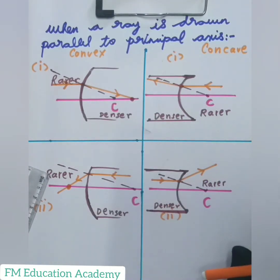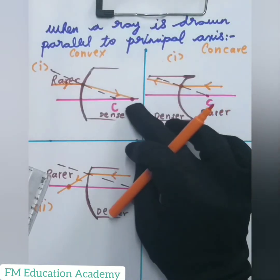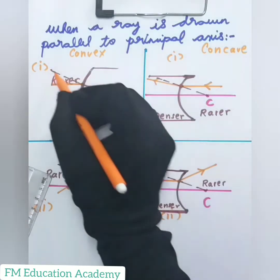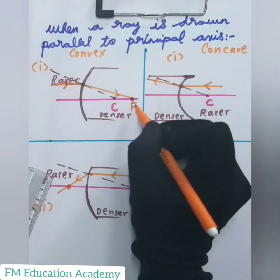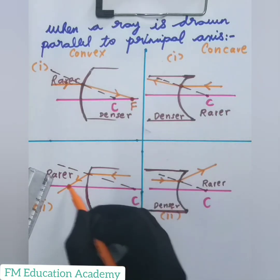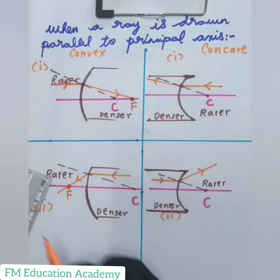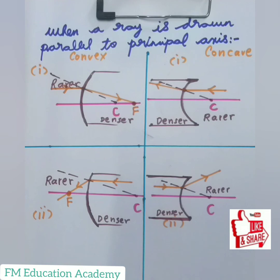The opposite is true for mirrors. In convex lenses, the ray meets after refraction on the focus. This point where the ray meets after refraction is called the focus, indicated by capital F. Similarly, the point where the ray meets after refraction on the concave side is also called the focus. Thank you very much for watching — this video will be continued in the next parts. Please like, share, and subscribe for more such videos.